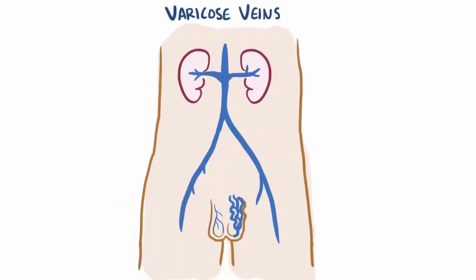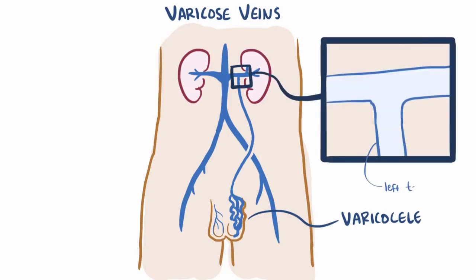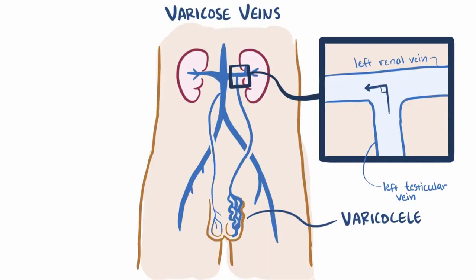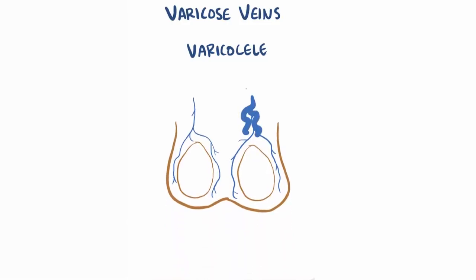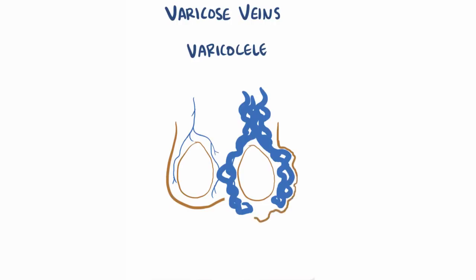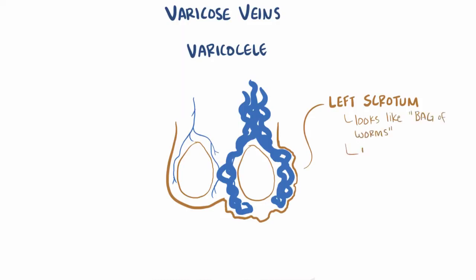Other than the legs, in men it can also occur in the scrotum, usually on the left side, where it's called a varicocele. This develops because the left testicular vein brings blood back to the left renal vein at about a 90 degree angle, while the right testicular vein drains directly into the inferior vena cava. Getting blood back up through a tight 90 degree turn isn't that easy, and so blood backs up, causing the testicular vein to enlarge and get tortuous, where it starts to loop back and forth on itself, making the scrotum look like a bag of worms, which gets larger when standing and smaller when lying flat.